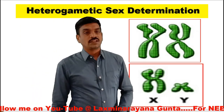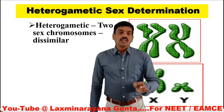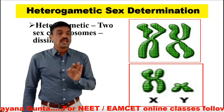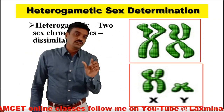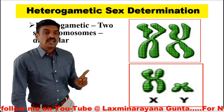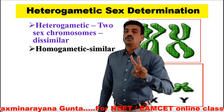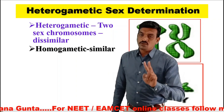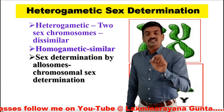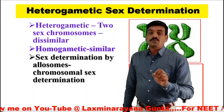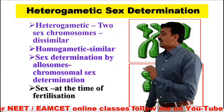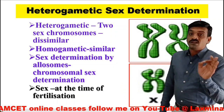Heterogametic sex determination: hetero means dissimilar. If two sex chromosomes are dissimilar, they are called heterogametic — that is, X and Y. If an individual has one X chromosome and one Y chromosome, it is called heterogametic. An individual having both similar sex chromosomes is called homogametic. If the sex is determined by allosomes, this type of determination is called chromosomal sex determination. The sex is determined at the time of fertilization, not at the time of birth.